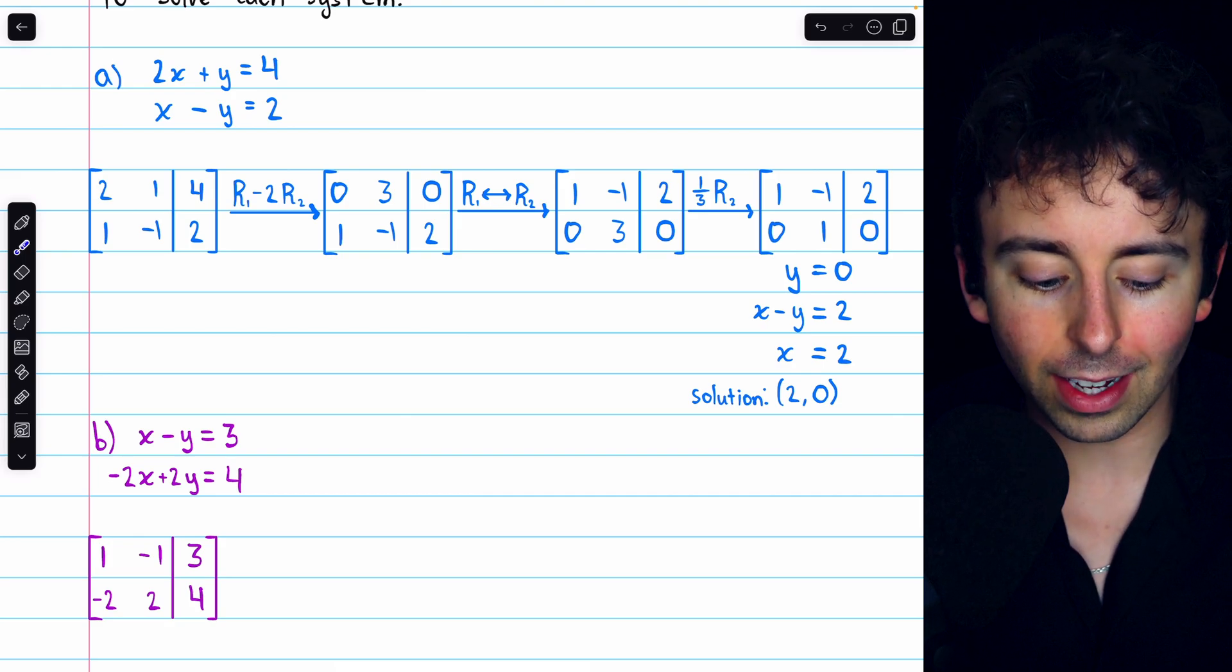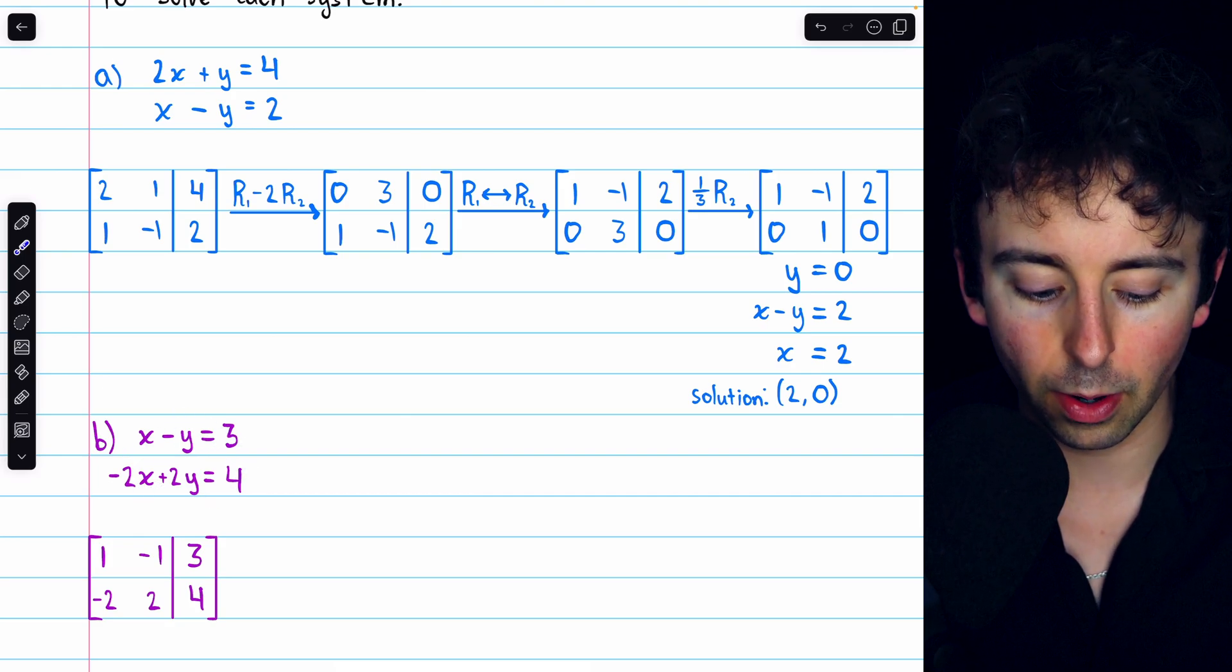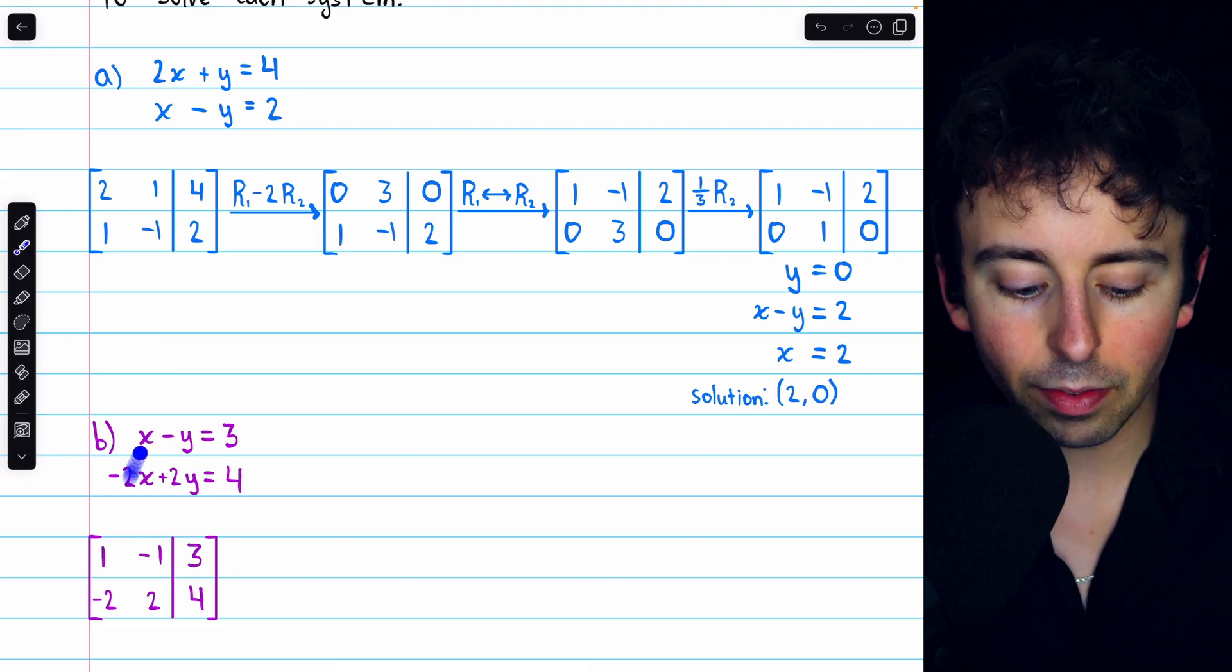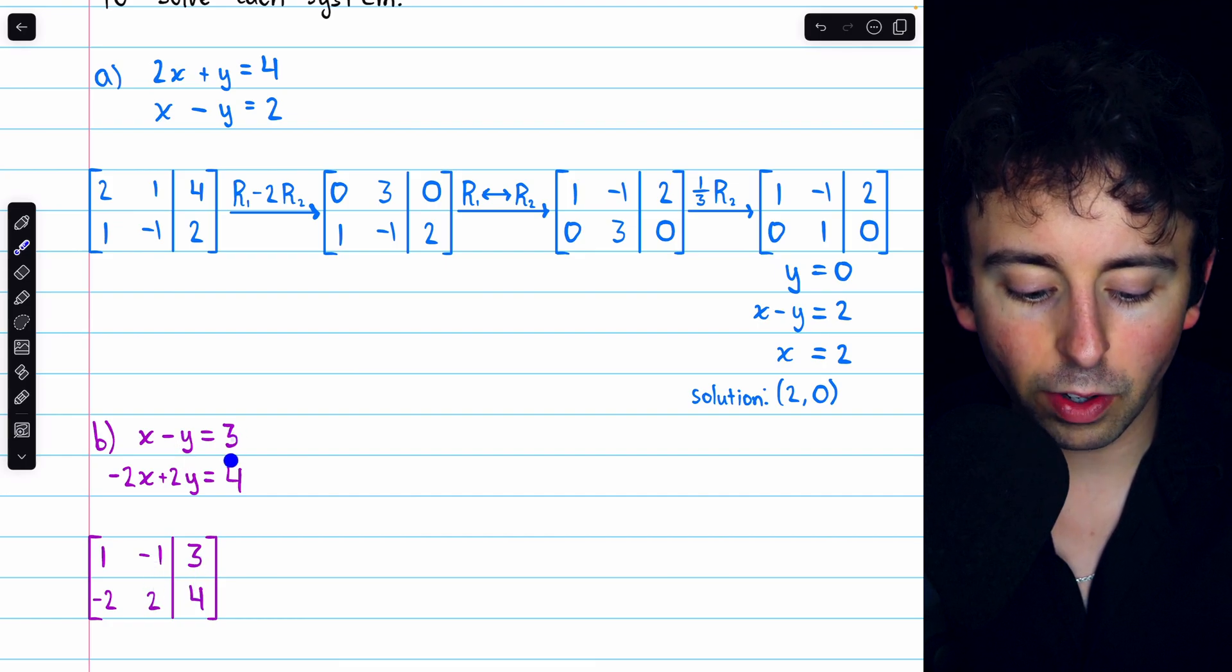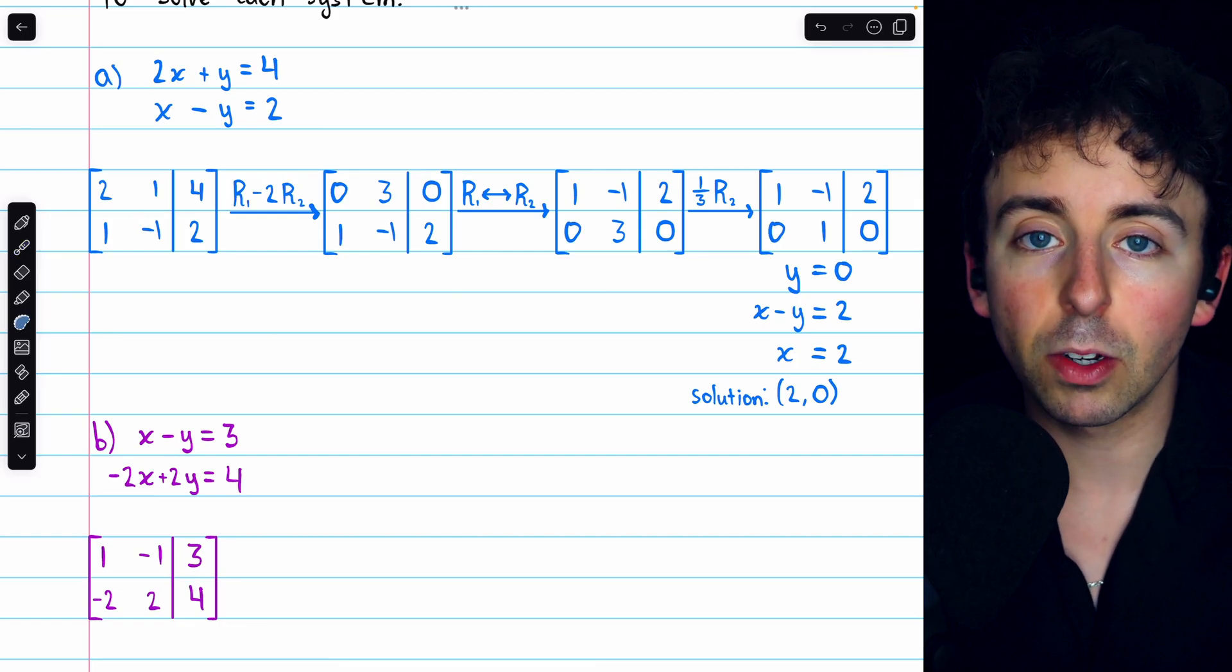Let's move on to the second example. We have this system of two equations in two unknowns, and here is the augmented matrix. In column 1, we have the coefficients of x. In column 2, we have the coefficients of y, and separated from those coefficients, we have the constants.